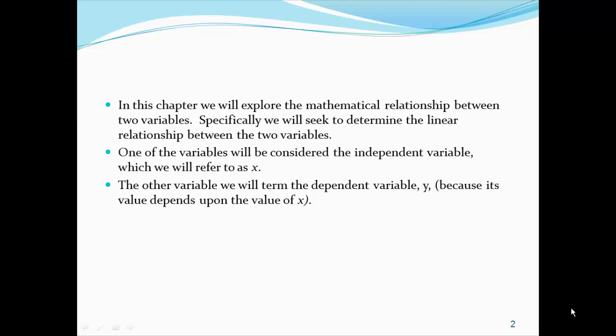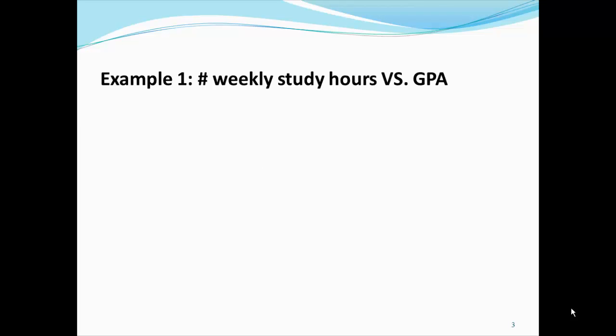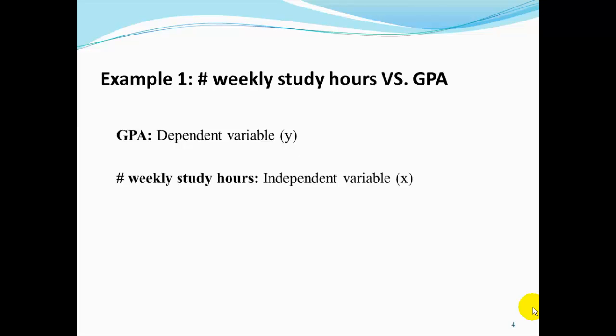Let's explore two quick examples to discuss linear relationships between variables. First, many of us intuitively believe that a relationship exists between the number of weekly study hours and a person's GPA. For this example, we would assume that GPA is our dependent variable, y, because a person's GPA depends upon the number of weekly study hours they put in. The number of weekly study hours, therefore, we will consider our independent variable, x.